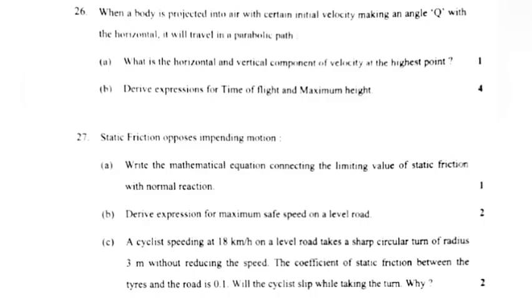When a body is projected into air with certain initial velocity making an angle theta with horizontal, it will travel in a parabolic path. (a) What is the horizontal and vertical component of velocity at the highest point? (b) Derive expression for time of flight and maximum height.